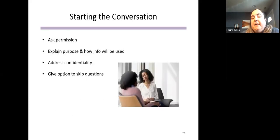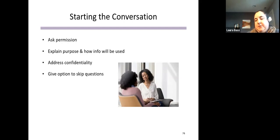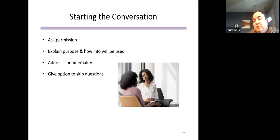From piloting the tool, a couple of pointers for starting the conversation: first, ask permission — let the family know you'd like to ask some questions regarding their children's health and confirm they're on board. Then explain the purpose of the tool and how it will be used, which will vary from program to program. Let folks know how the information will be used, address confidentiality, and give the option to skip questions — families may have trauma histories or negative experiences with service providers that make some questions uncomfortable.